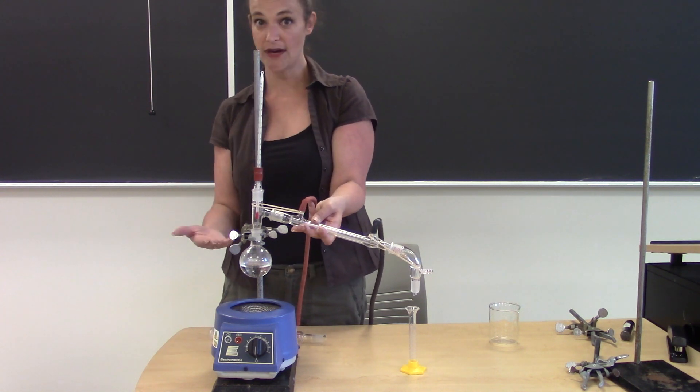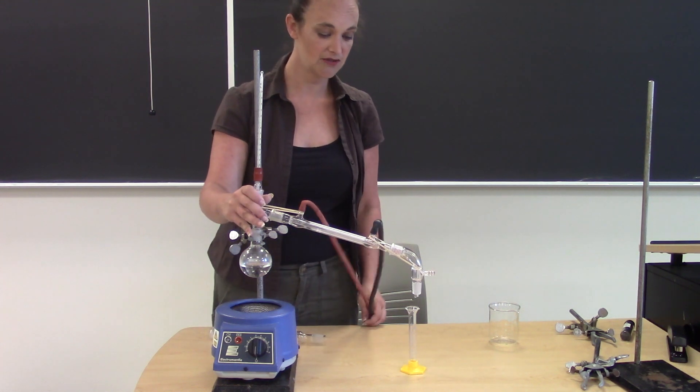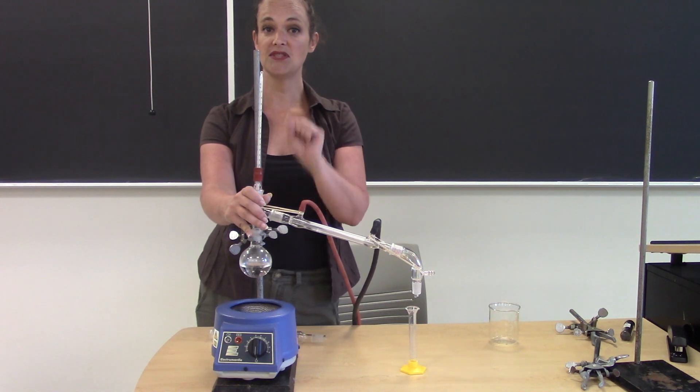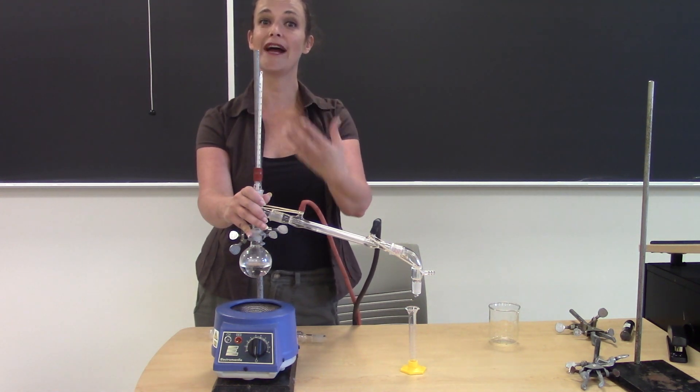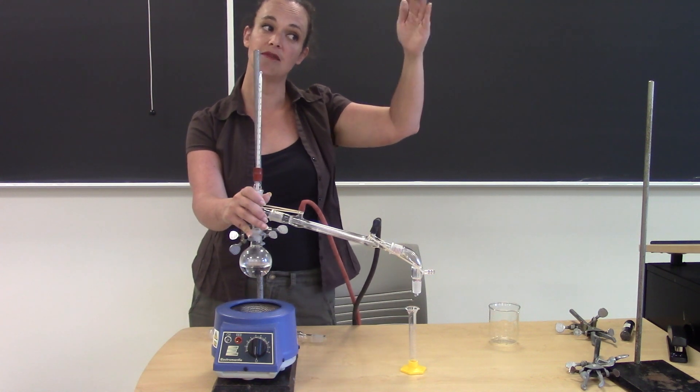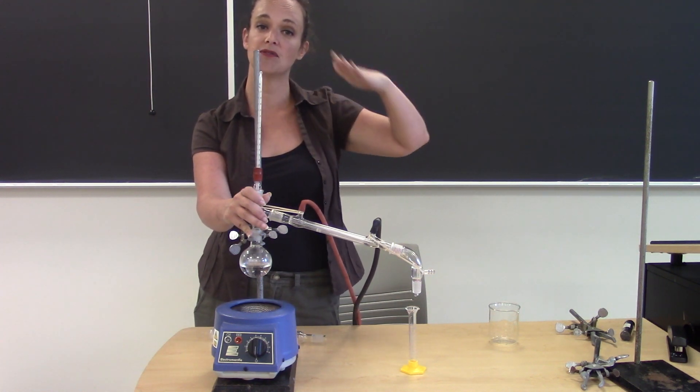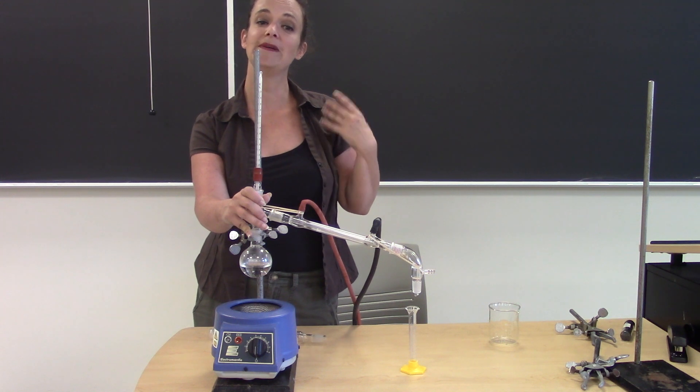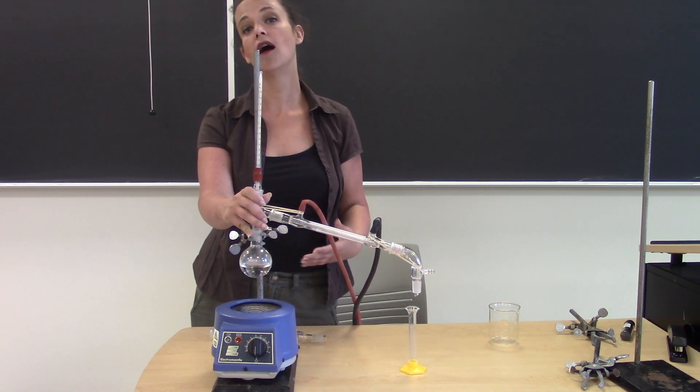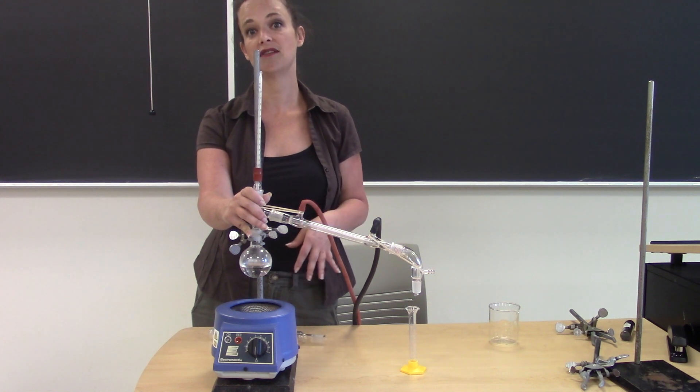You guys are going to try this. You're going to be distilling a mixture of cyclohexane and toluene. One of you is going to run the simple distillation while the other one runs the fractional distillation. You're going to be recording the temperatures that the thermometer records throughout the process and you're going to be analyzing the purity of each of your products using gas chromatography.